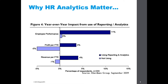So why does HR analytics matter? This is a quick overview of results from a study by Aberdeen Group back in 2009, consisting of 233 firms over a four-year period — year-over-year impact from companies that use analytics shown in dark blue versus those not using analytics in light blue. On three areas — employee performance, profit per full-time employee, and revenue per full-time employee — companies using analytics are performing at a far greater rate: plus 11% for employee performance, 4% on profit, and 4% on revenue. So although this is just a single study, it does provide some compelling evidence for using analytics.